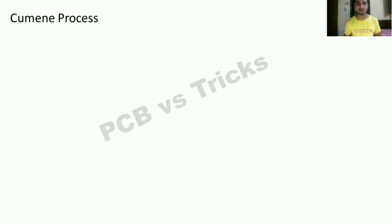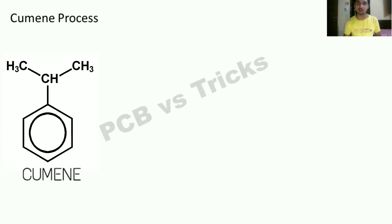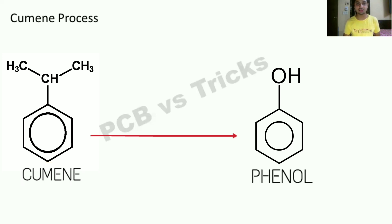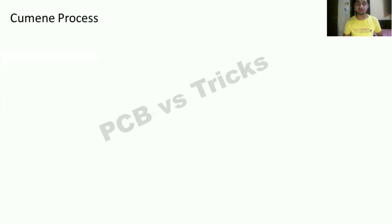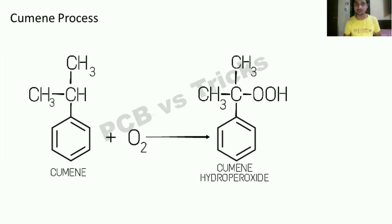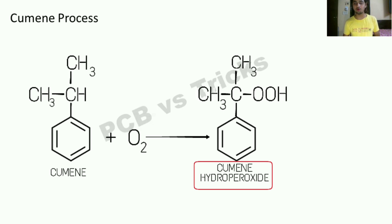Let's begin. The Cumene process is named after its reactant, Cumene. Cumene is our reactant and finally we will create phenol. Basically, this reaction is used to create phenol. In the first step, we oxidize Cumene in the presence of air. When we react with O2, the O2 will go under the C-H bond and sit there. In this way, we find a very important intermediate: Cumene hydroperoxide.